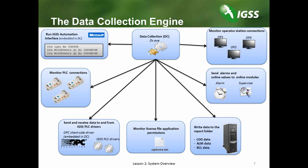The data collection engine. One of the most important engines in IGSS is the data collection engine, often abbreviated DC. The data collection engine is unique to the IGSS system and is a central part of the IGSS software product, enabling the online monitoring and control necessary for the system. The DC engine sends changes that occur in the process to operator stations where personnel monitor and control the system. It also processes and sends alarms and online values to online modules such as the alarm module and the supervised module. It is also the function of the DC engine to collect and write data to the report folders, including log data, alarm data, and base class data, or BCL.